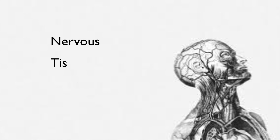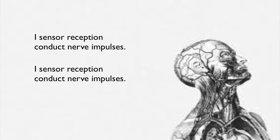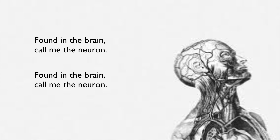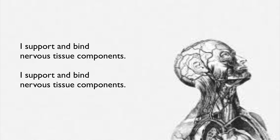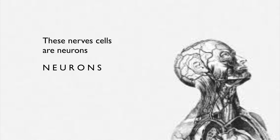Nervous tissue — it uses sensory reception and conducts nervous impulses. Found in the brain — call it the neuron. It supports and binds nervous tissue components. These nerve cells are neurons — N-E-U-R-O-N-S.